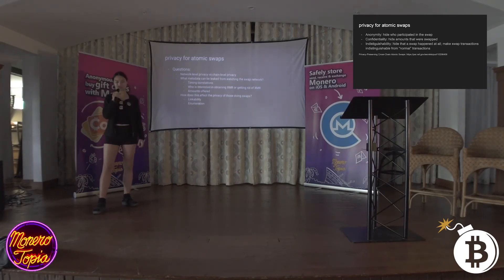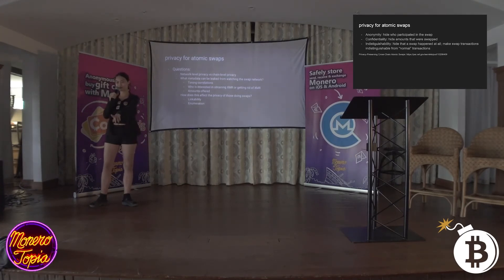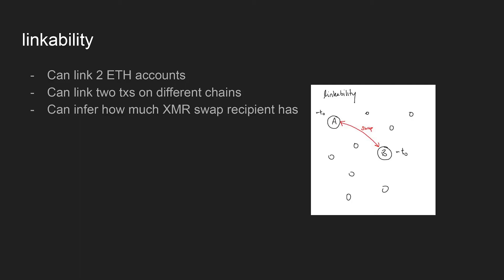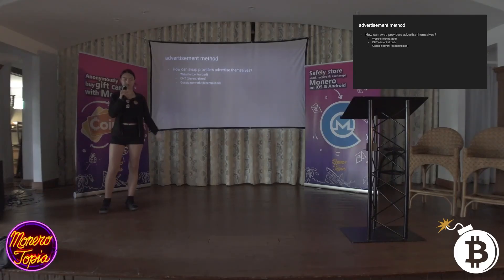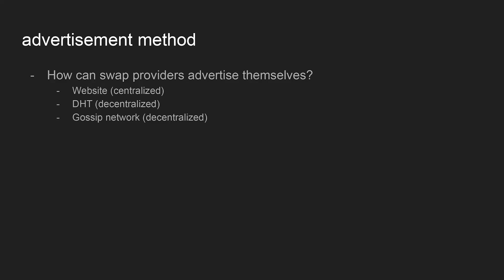You can also find out who's interested in getting Monero or ETH, and everyone on the network and their IPs. From the amounts people are offering to swap, you can extrapolate that someone has at least that much. On the chain level, the first concern is linkability. On Ethereum, in the swap contract you unfortunately need ETH to get more ETH because you have to pay gas fees to call the claim function — this means you can link two ETH accounts together. You can also use timing correlations to link transactions on different chains.